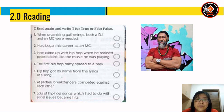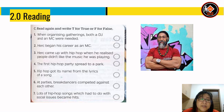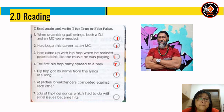Read again and write T for true or F for false. Number 1: when organizing a gathering, both a DJ and an MC were needed - True. Number 2: Herc began his career as an MC - False. Number 3: Herc came up with hip-hop when he realized people didn't like the music he was playing - False. Number 4: the first hip-hop party spread to a park - True. Number 5: hip-hop got its name from the lyrics of a song - False. Number 6: at parties, breakdancers competed against each other - True. Number 7: lots of hip-hop songs about social issues became hits - True.